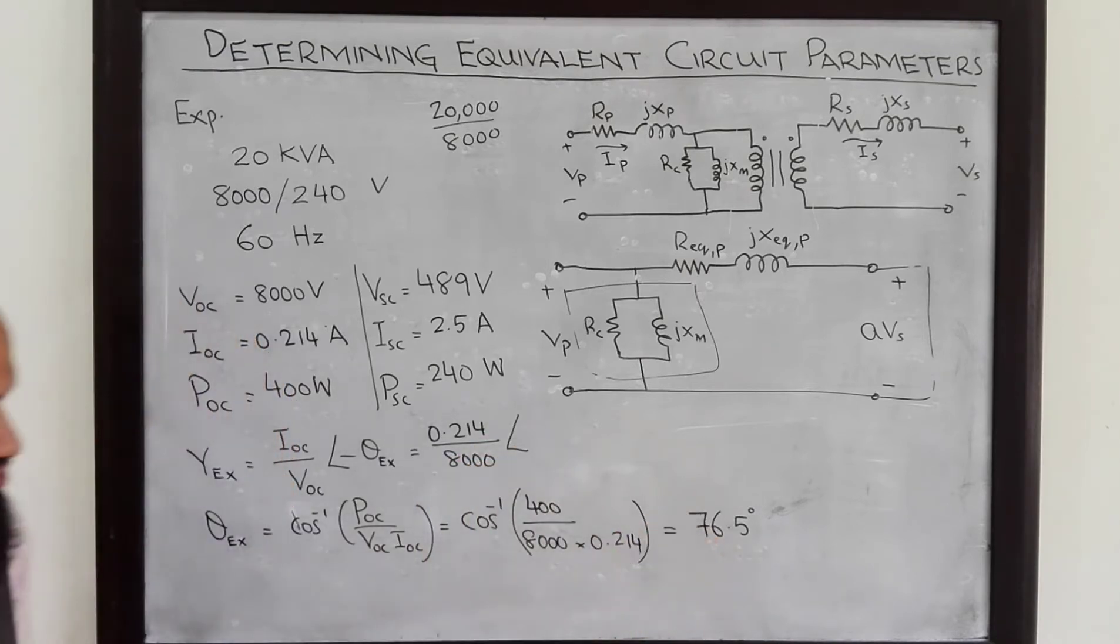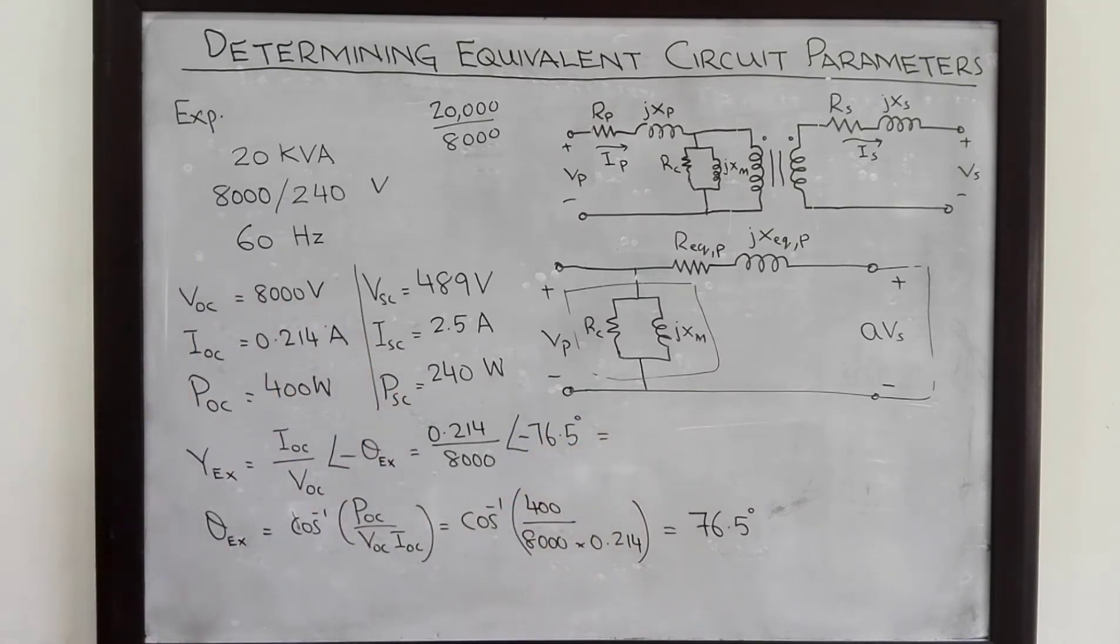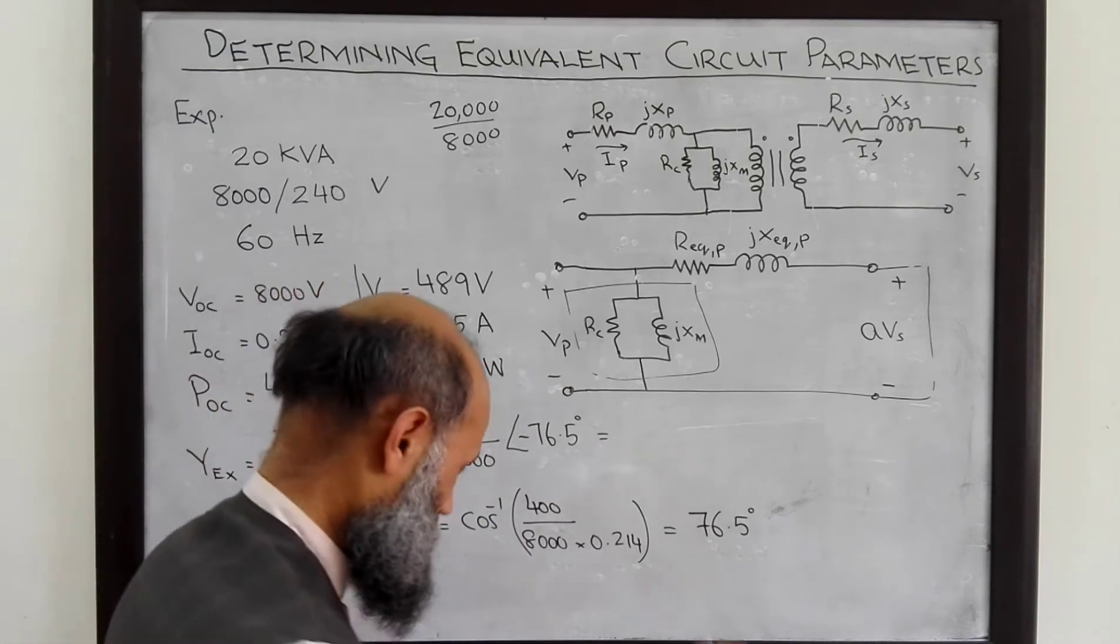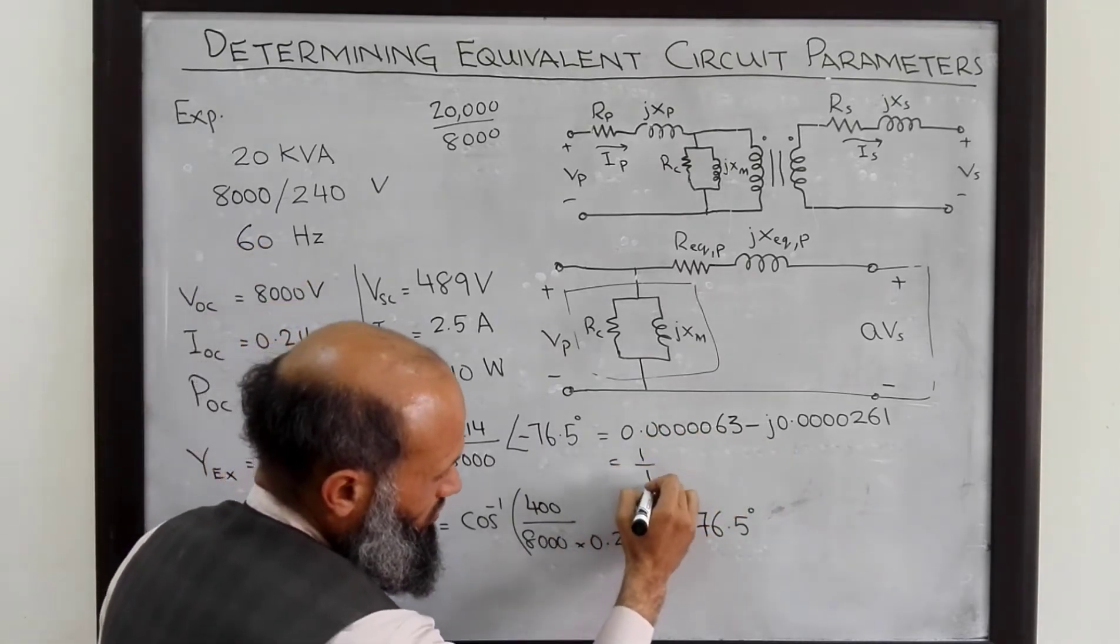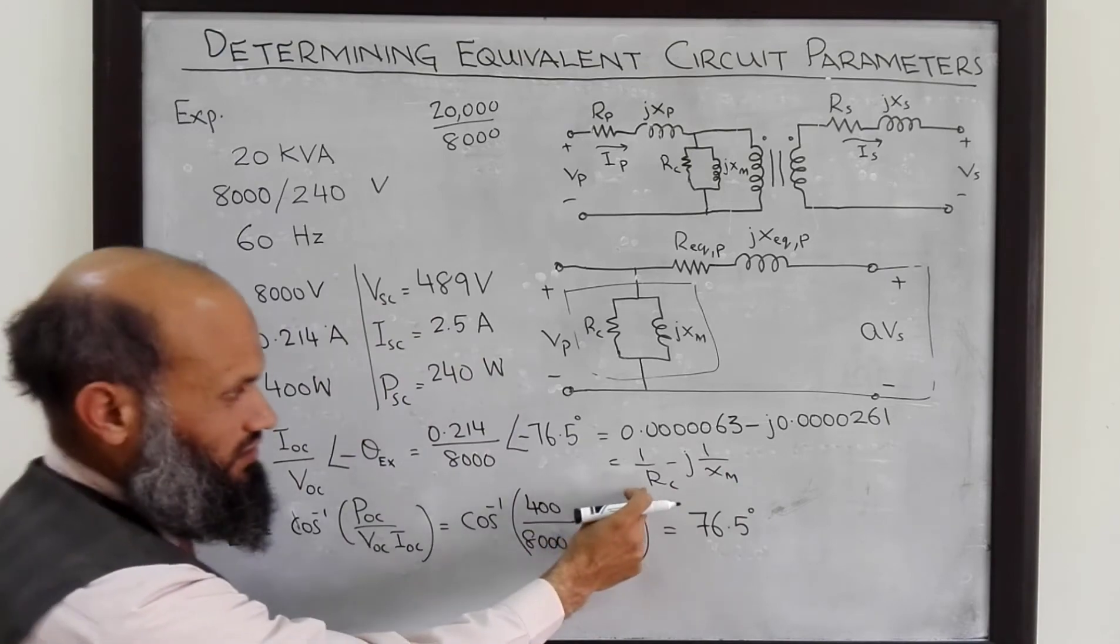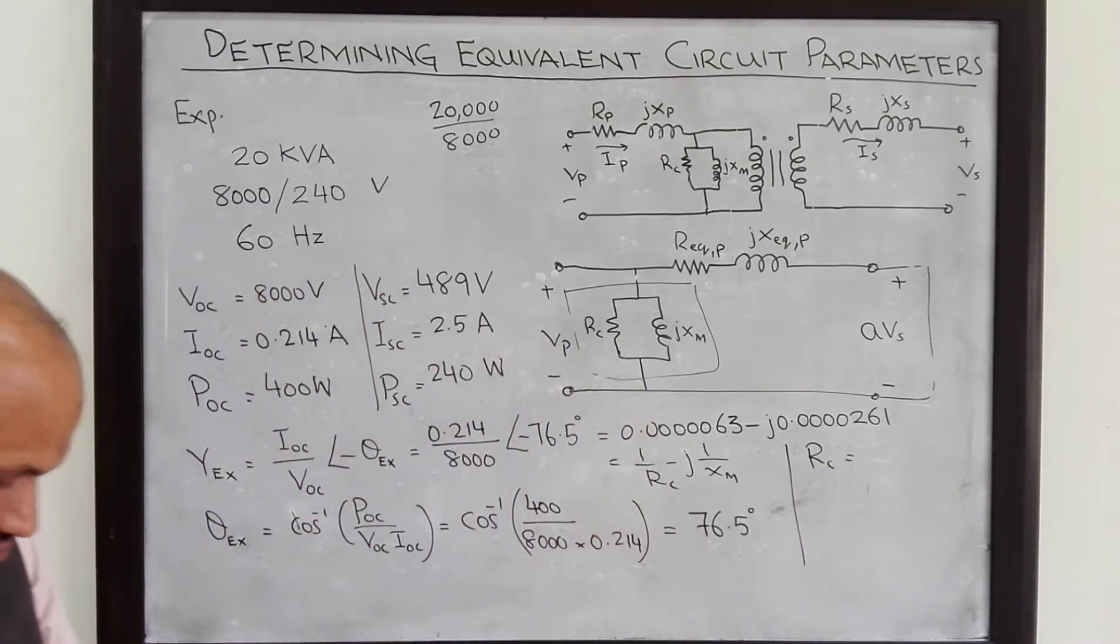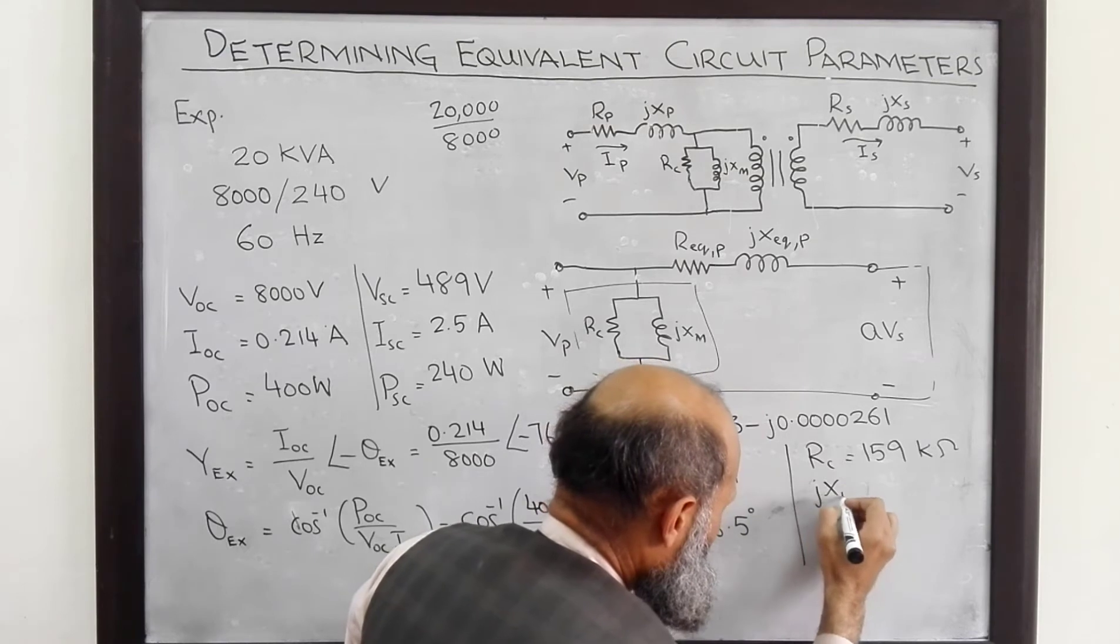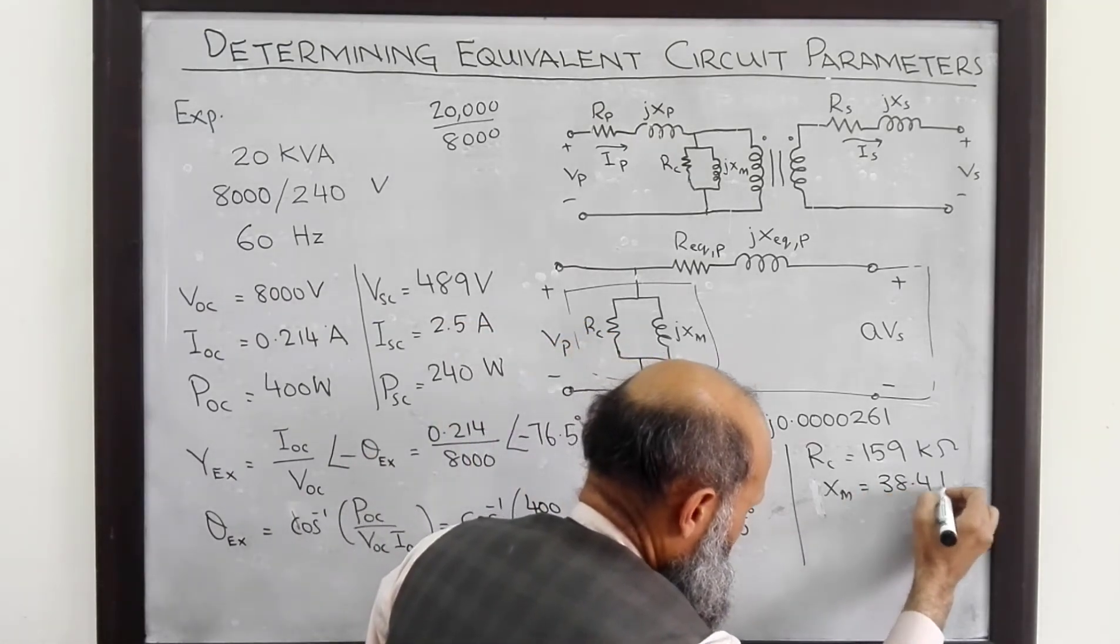And hence I open circuit over here is 0.214 and V open circuit is 8000 and angle which we have computed over here minus 76.5 degrees. And therefore Y excitation, writing this complex number from the polar form into the rectangular form, the real part of this complex number is equal to 1 over RC and the imaginary part is 1 over Xm. And from here RC comes out to be equal to 159 kilo ohms and Xm is equal to 38.4 kilo ohms.